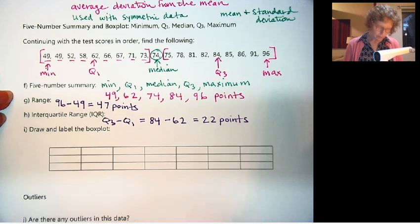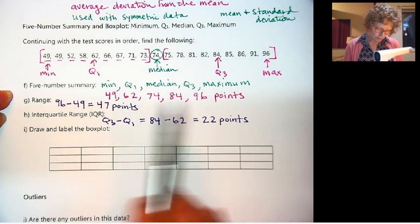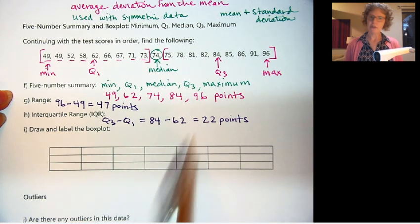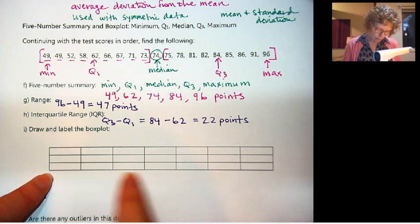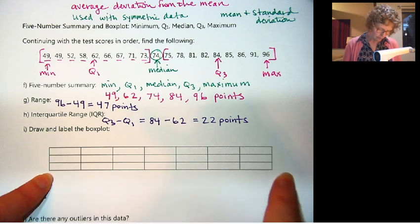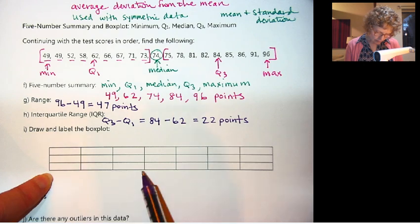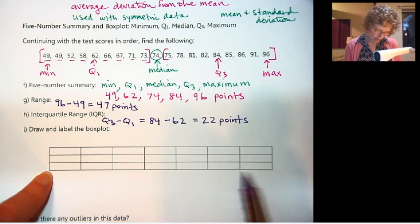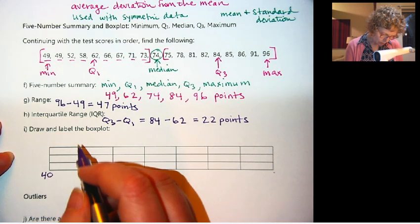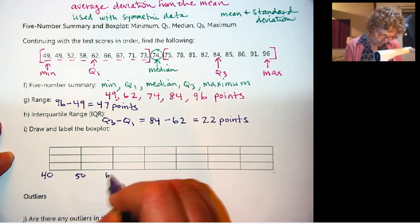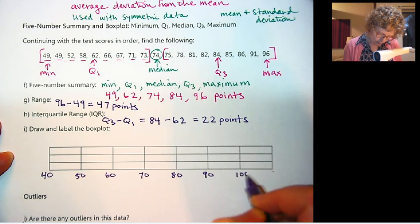Now we are going to make what's called a box plot. The box plot uses these five numbers, the five-number summary. And you'll see where the IQR is on there also. Just like when we made our histogram, we make a scale along the bottom. We're starting with 40: 40, 50, 60, 70, 80, 90, 100. I'll just start at the left.